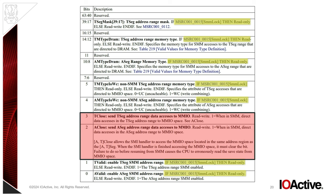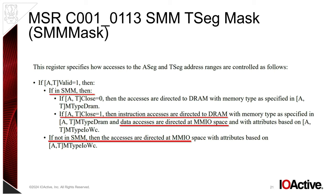What happens is, when this T-close bit is set, the data accesses that the core performs when it's running in SMM are going to be directed to MMIO instead of to SMRAM. And we could set this bit from ring zero, because it's not locked by the SMM lock. The documentation says: if you have a valid TSEC region and you're in SMM and T-close is set, instruction fetches are still going to be directed to DRAM, but data accesses are going to go to MMIO instead. If you're not in SMM, then both types of accesses are going to go to MMIO.